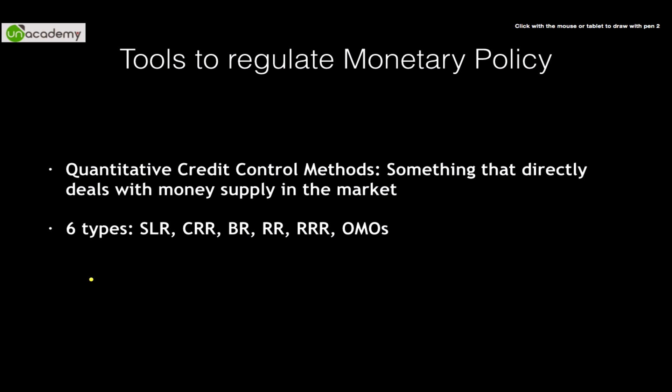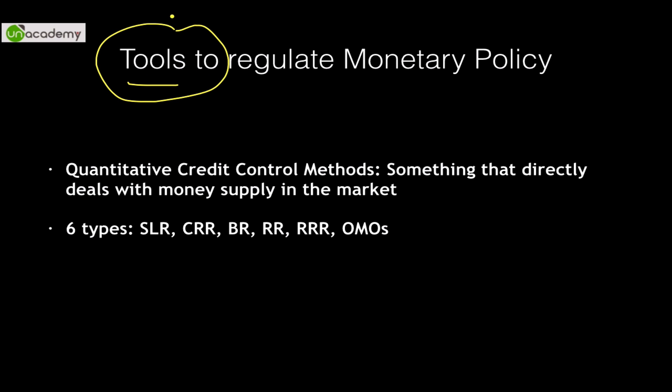Coming to the next topic, which focuses upon the tools to regulate monetary policy. Broadly speaking, there are two types of tools within monetary policy. First is known as quantitative tools and the second are qualitative tools. Quantitative tools focus upon the quantity of money supply in the economy, and are focused upon by six basic types of rates that regulate monetary policy. We would discuss each and every rate in the coming slides.